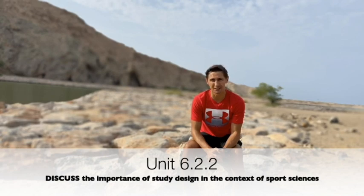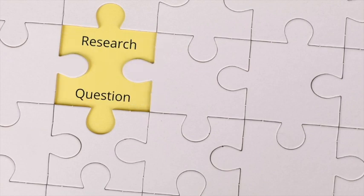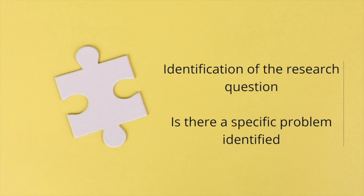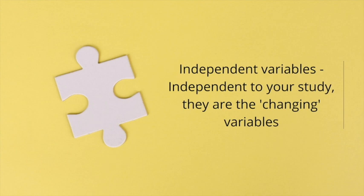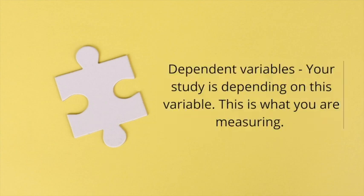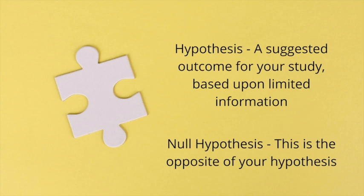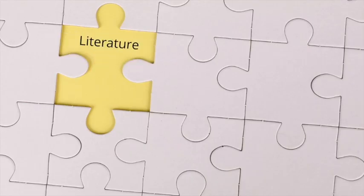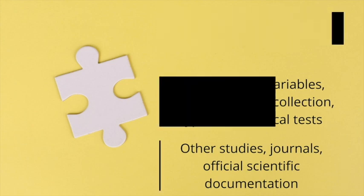Next we're going to talk about study design and its importance within the world of sports science — again, two birds one stone: IAs and the paper two exam. Let's start with research question. Do you have a specific problem in mind? Can you narrow that problem? Can you narrow it again? You've probably come up with a research question suitable to explore. Once you've done that, you need to think about your variables — independent variables are the changing ones, and dependent variables are what your study is depending on, what you're measuring. A hypothesis is a prediction as to what is going to happen within your study; a null hypothesis is the opposite. We've then got to review literature that exists regarding the variables, the data, the statistics, and other studies.